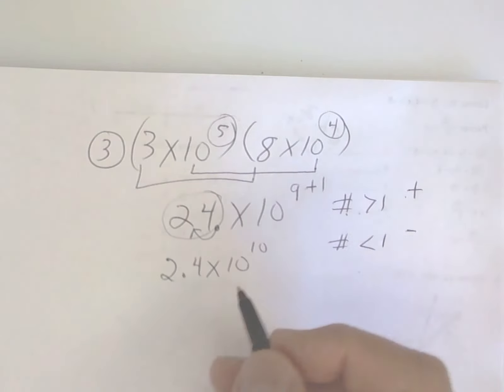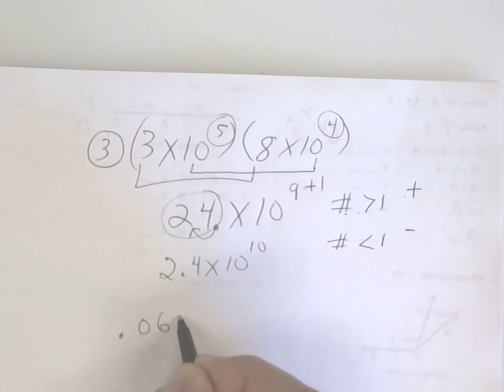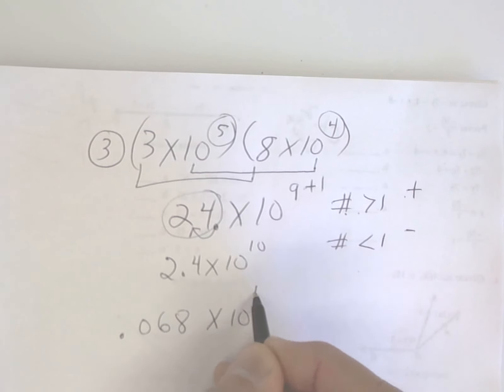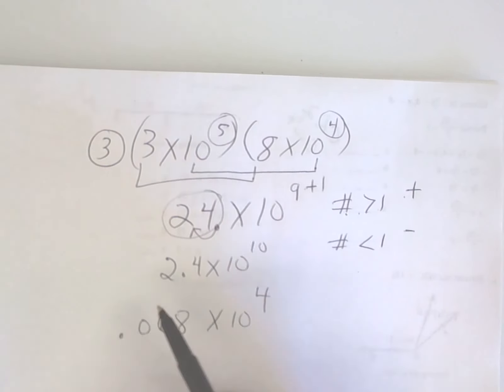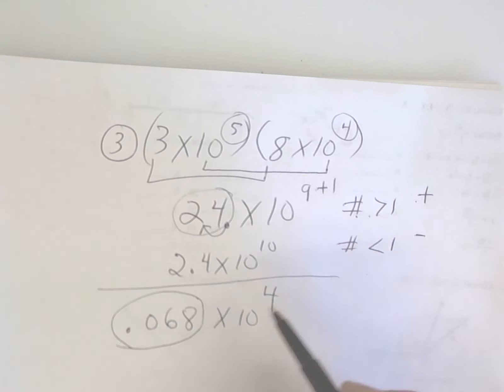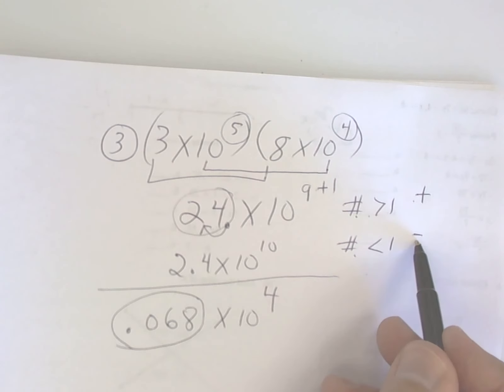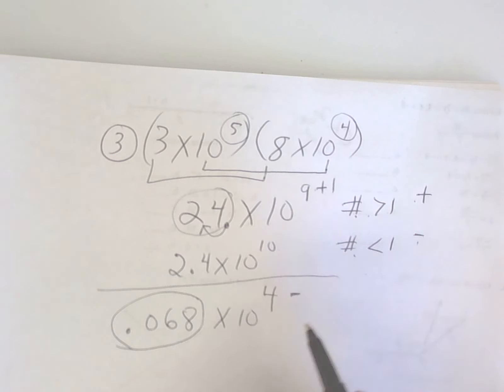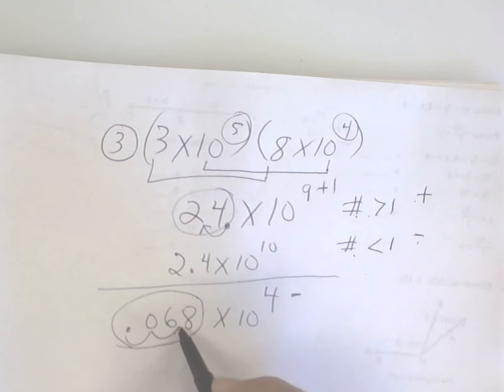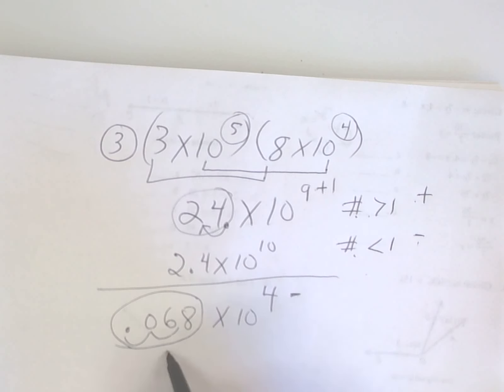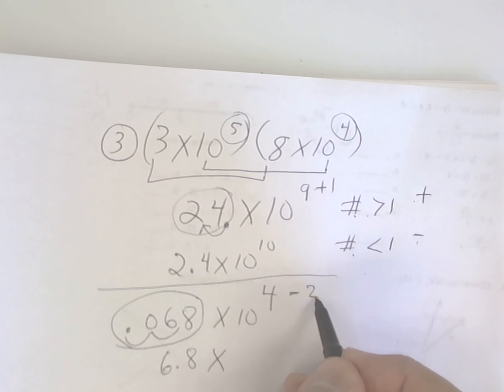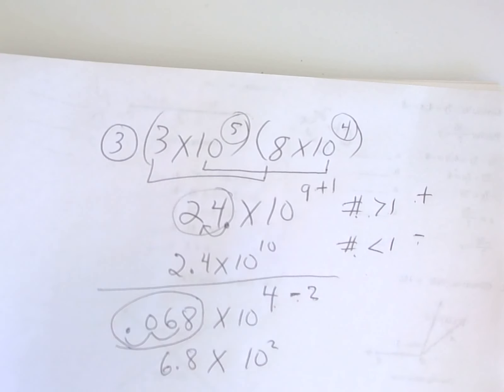Suppose you had this. Suppose you had 0.068 times 10 to the 4th power. This number right here is less than one, so it would be a negative. You have to move your decimal two places to get it in the scientific notation. And since you had to move it two places, you put a negative 2. And 4 minus 2 is positive 2. You're okay with that? Yeah.